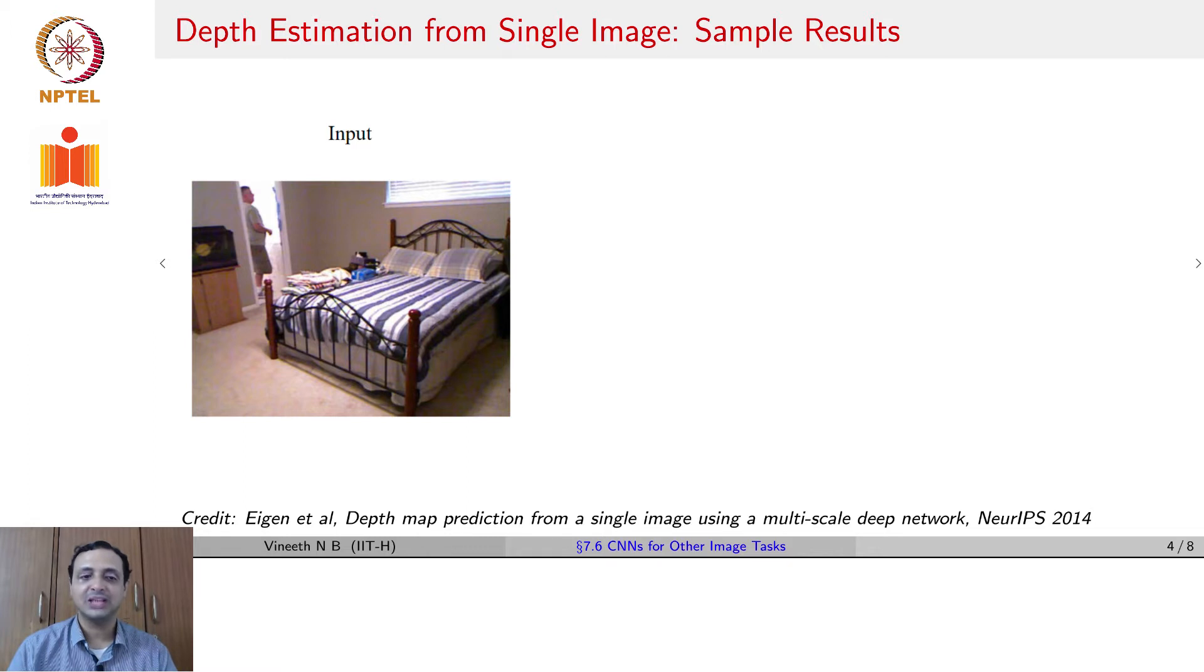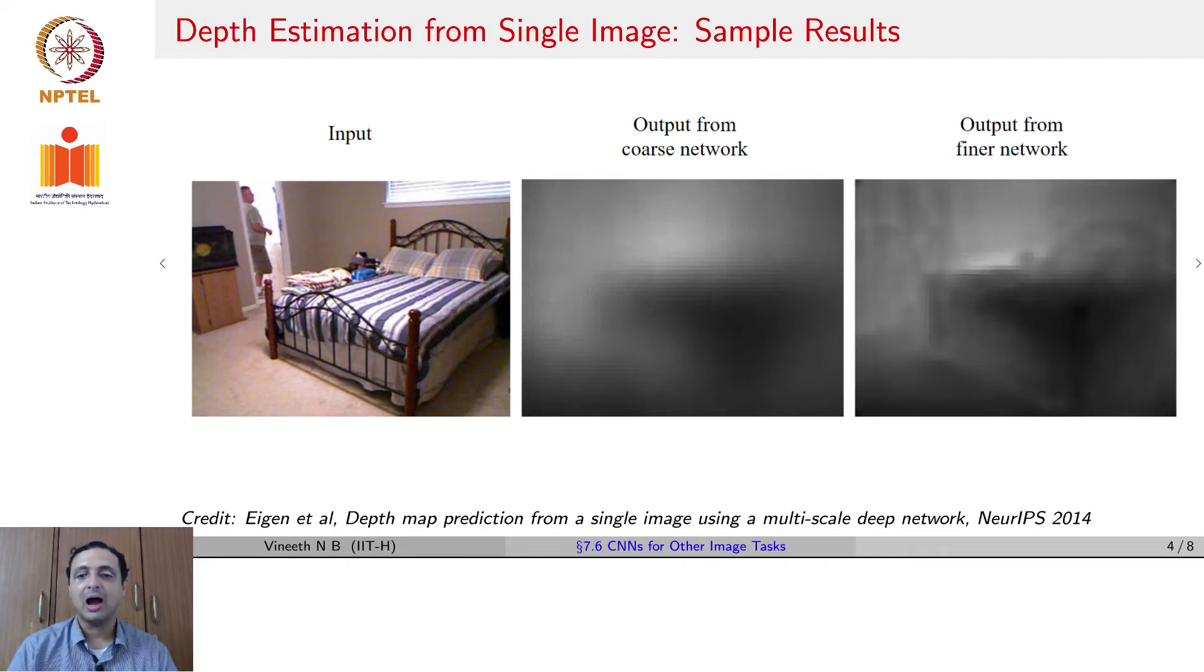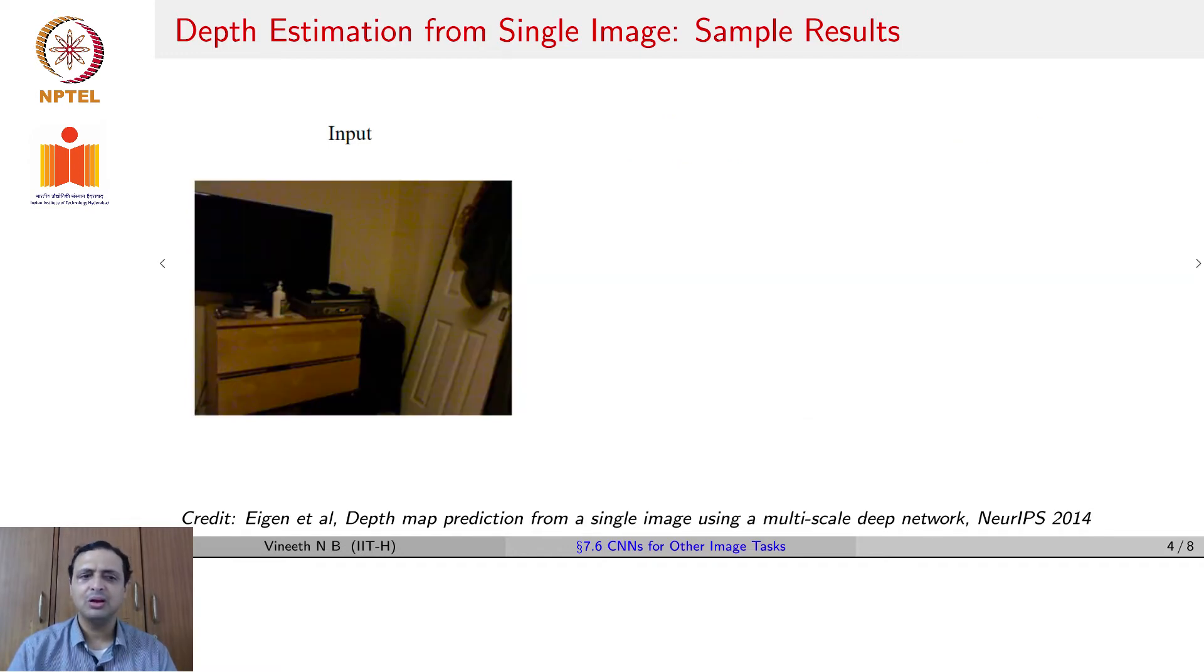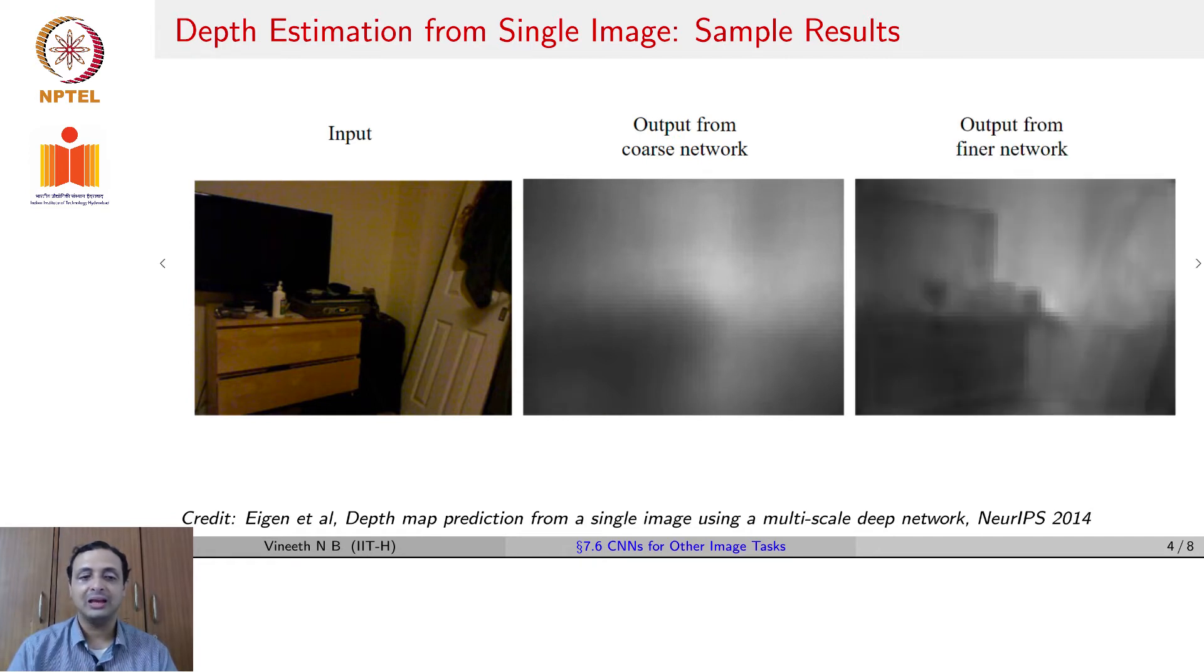Here are examples of this kind of approach, where given an input, the output of the coarse network looks something like this. And after refinement, it starts becoming more usable. Here is another example, given an input image, here is the depth estimate from the coarse network and here is the depth estimate after getting this from the finer network. The assumption here is you have a pixel-wise estimate of the depth provided to you as ground truth. So you could get a simple L2 error or a mean square error pixel-wise to be able to use as a loss function to train these networks.